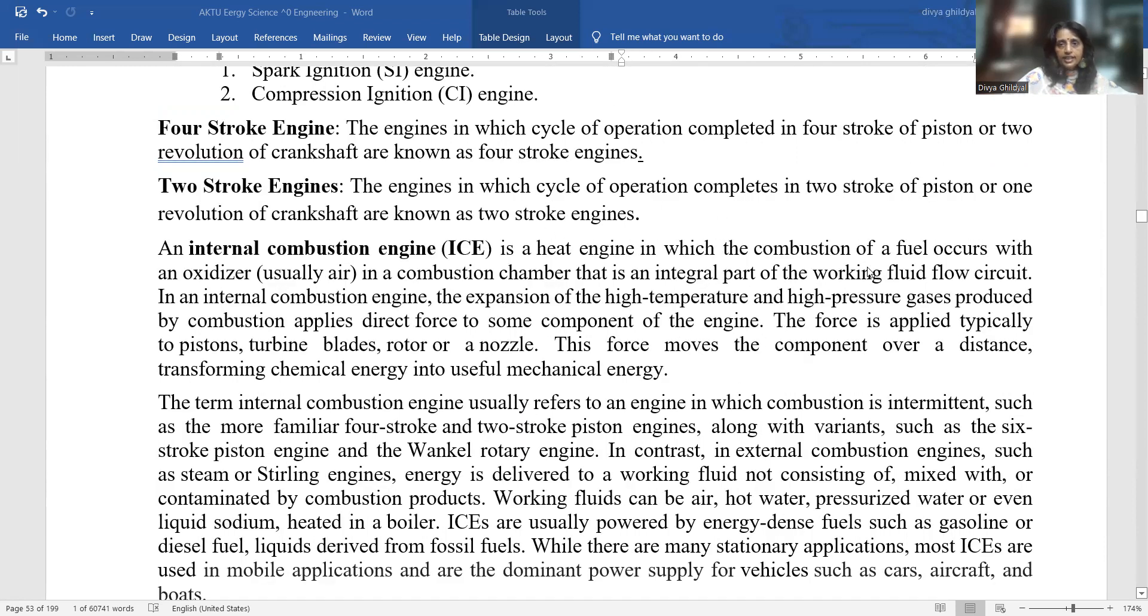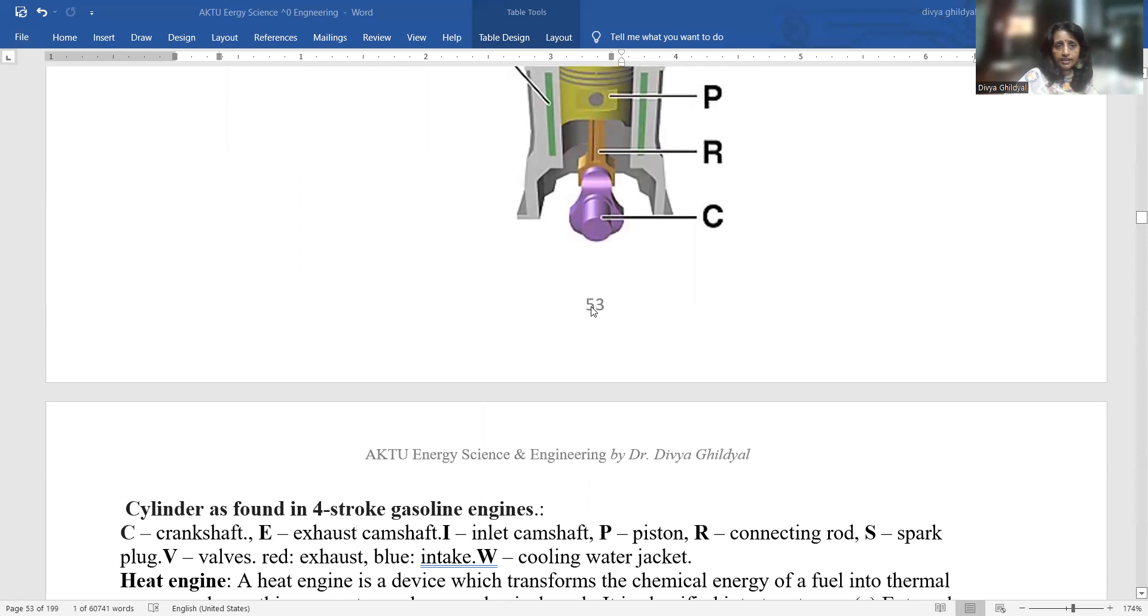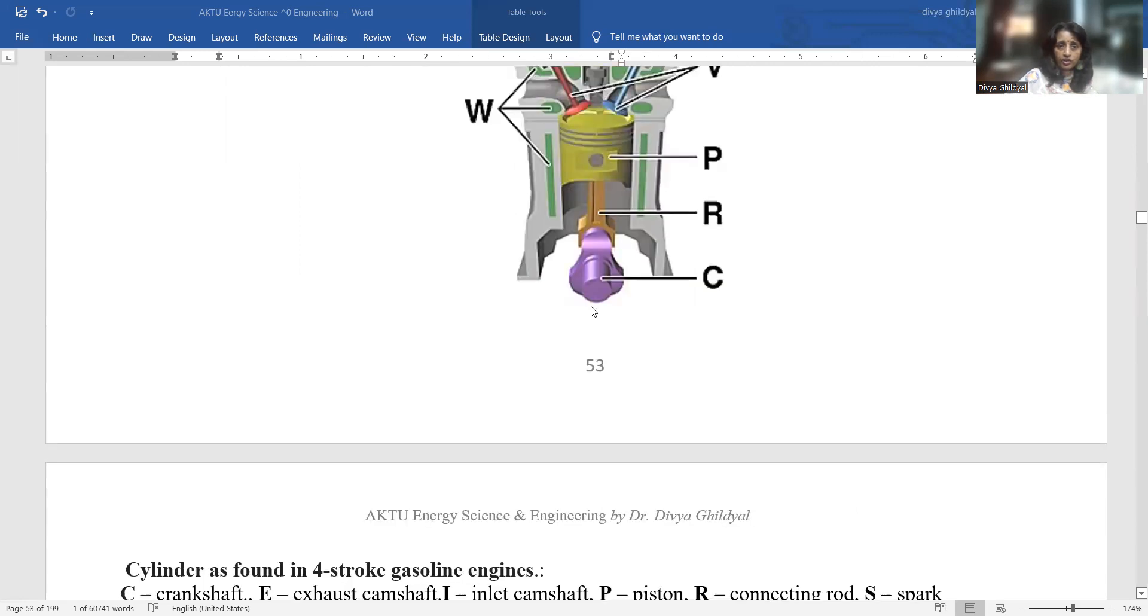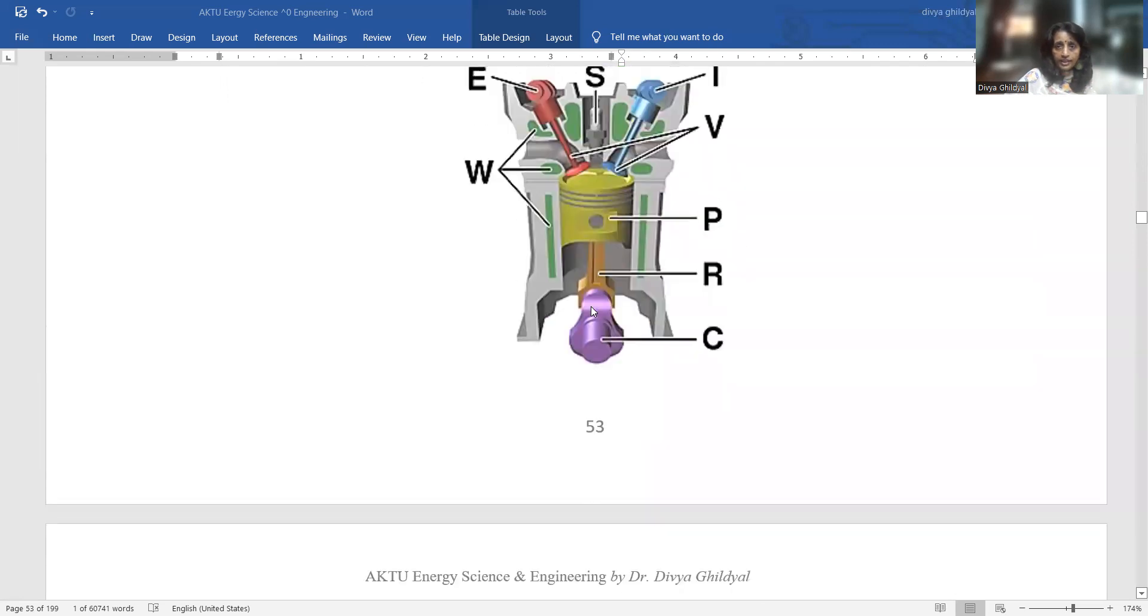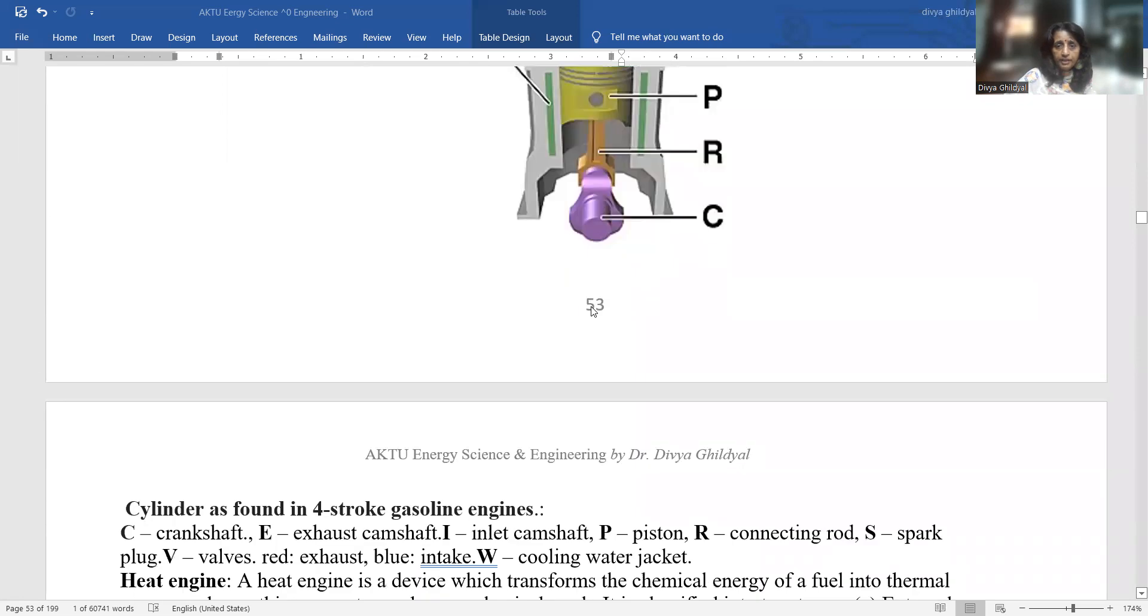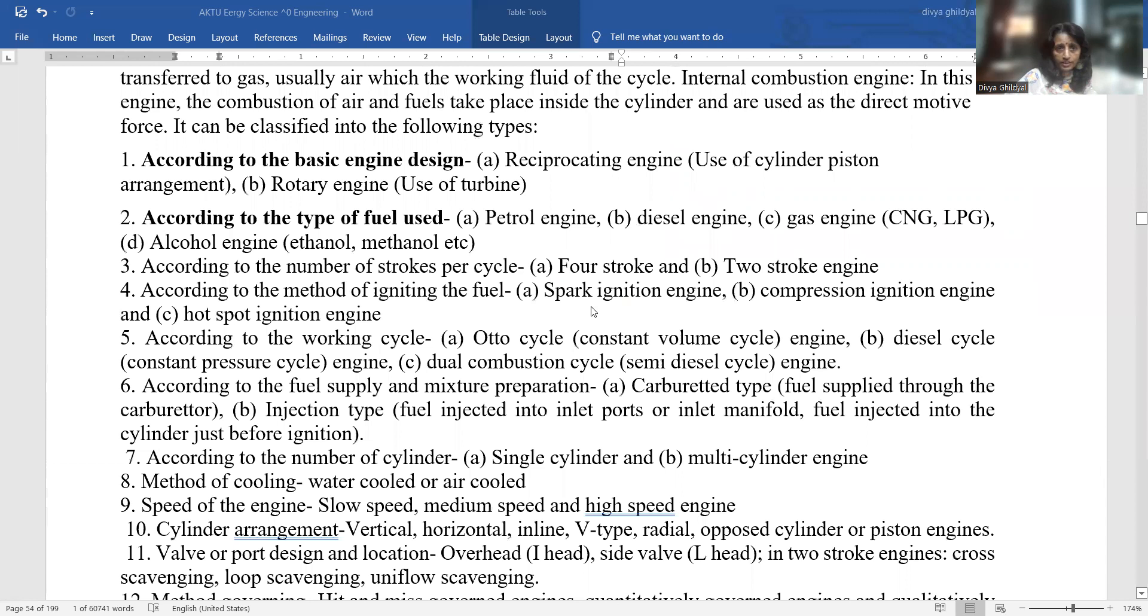In this heat engine, the combustion of fuel occurs with an oxidizer, usually air, in a combustion chamber. As you can see, this is a combustion engine cylinder as found in a four-stroke gasoline engine. C is your crankshaft, E is the exhaust camshaft, I is the inlet, P is piston, R is connecting rods, S is spark plug, B is valves, and W is the cooling water jacket. I will explain this to you in more detail here.